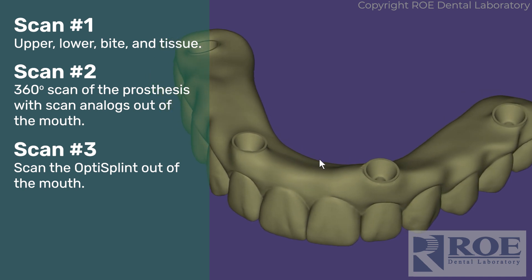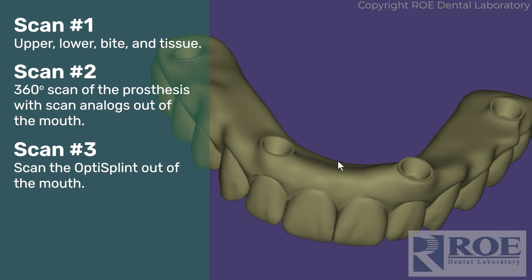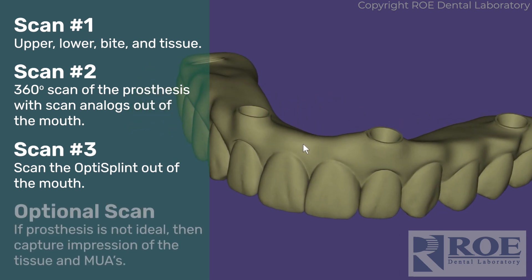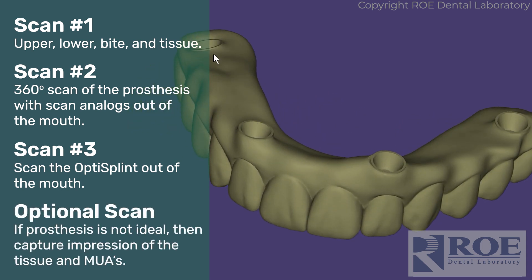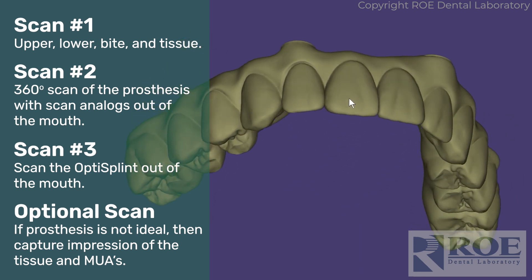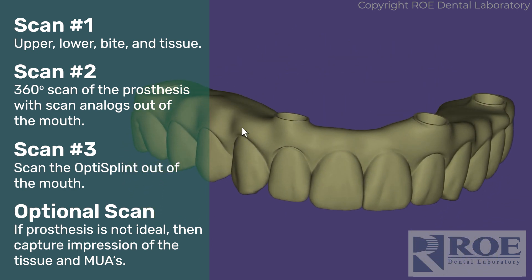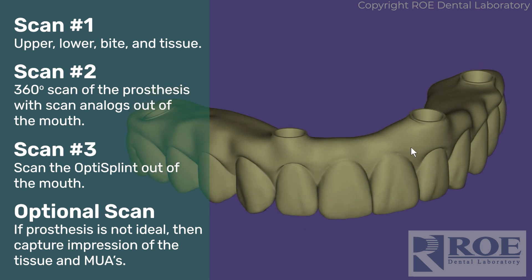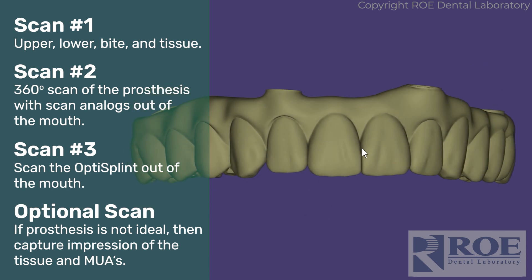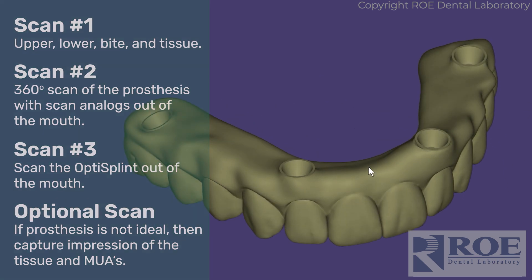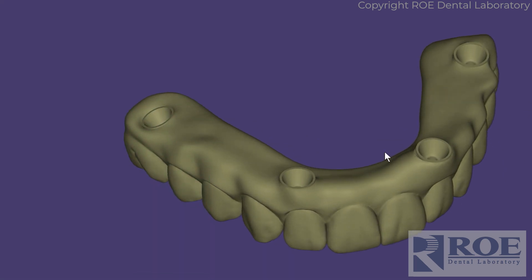This part is very important: if the intaglio of the prosthesis is not ideal, or you have tissue gaps or other issues, you will also want to capture an impression of just the tissue and the multi-units. We will bring that into the stack of scans and adjust the intaglio of the prosthesis so that it meets the tissue exactly as you want and is hygienic. That is the Grammatry restorative process.